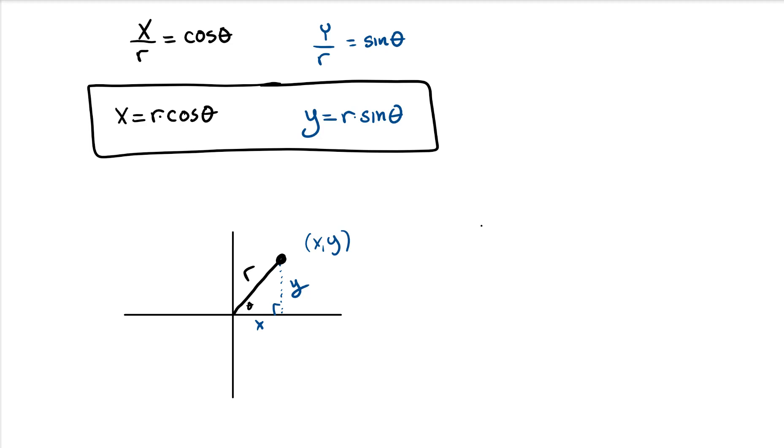Let me solve for sine of that angle. Sine of the angle is equal to y over... oh, there it is. And then cosine of theta? Wouldn't that be x over... That's where these come from. It just is. It's true.